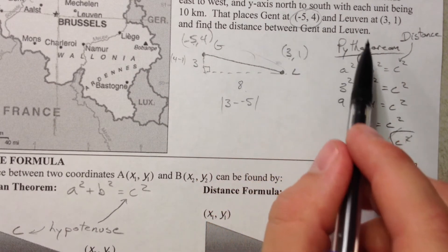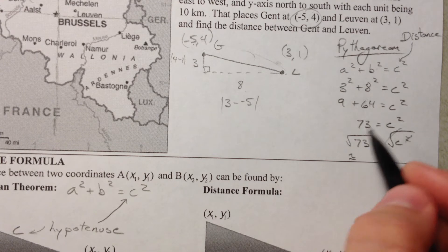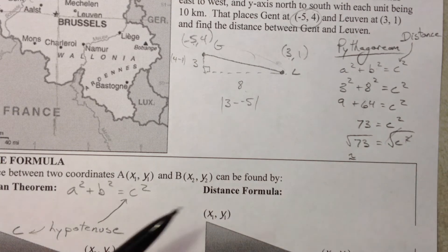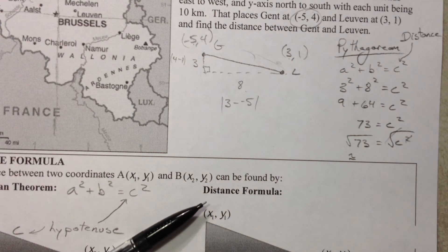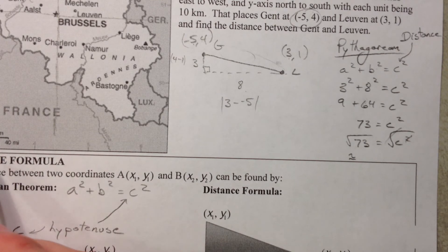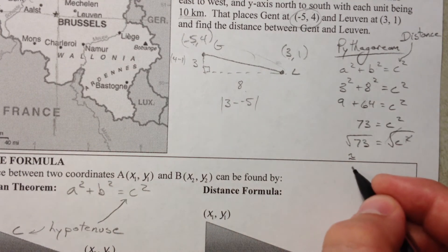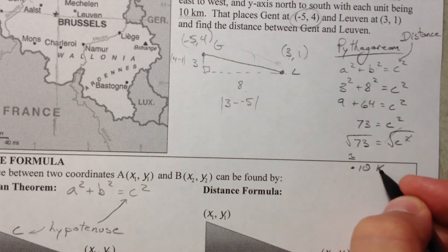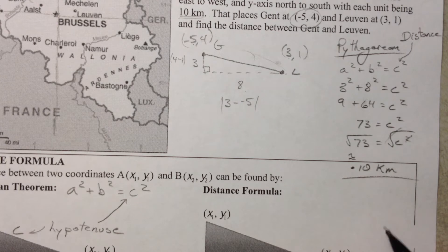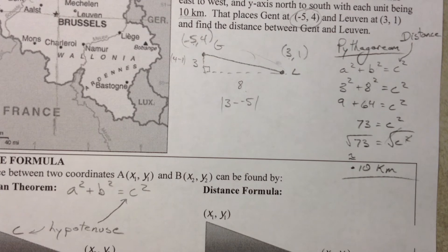And so then, now, that's the units. And so what we would need to do is that each one of those units is 10 kilometers. And so we'd have to multiply by 10 kilometers to actually find the distance. So, you guys can do that. That would be the actual distance from Ghent to Leuven.